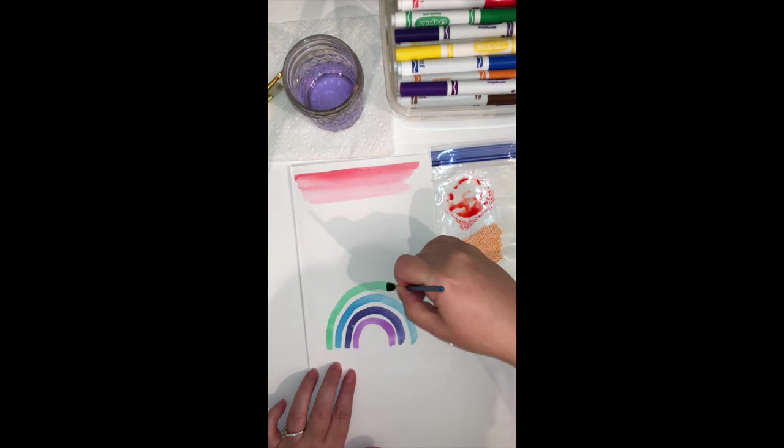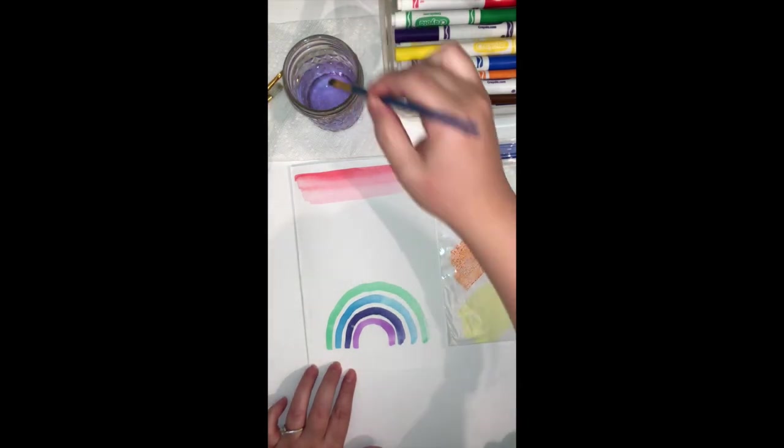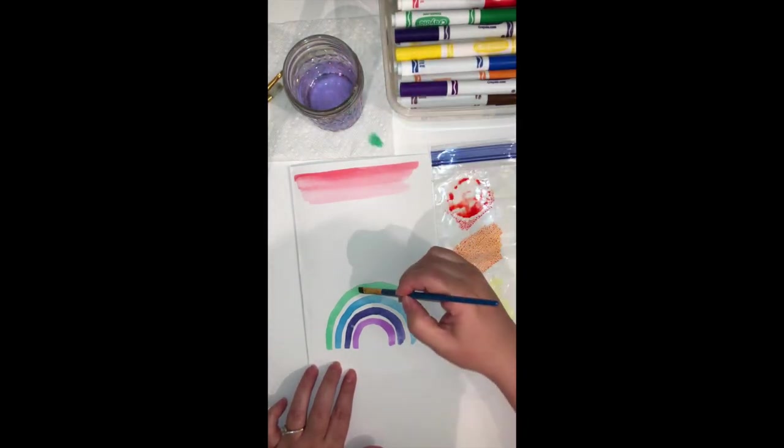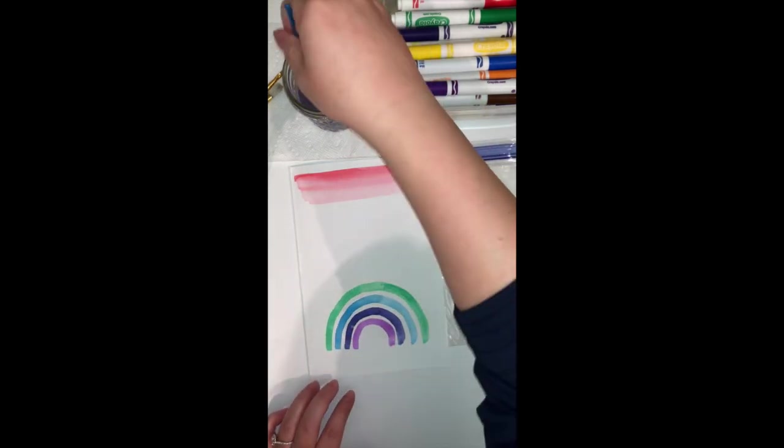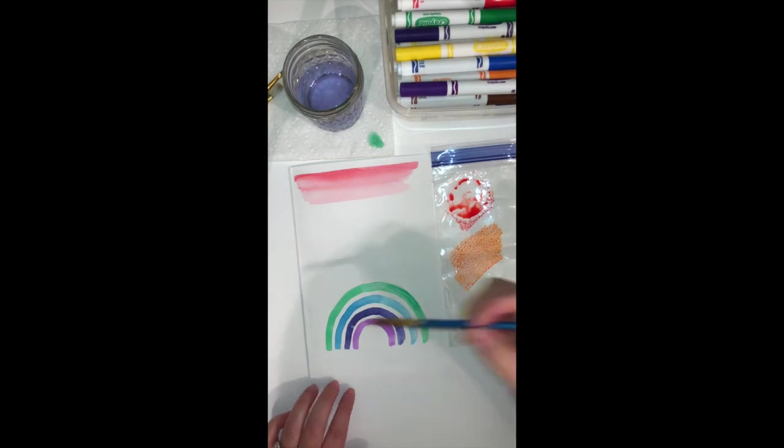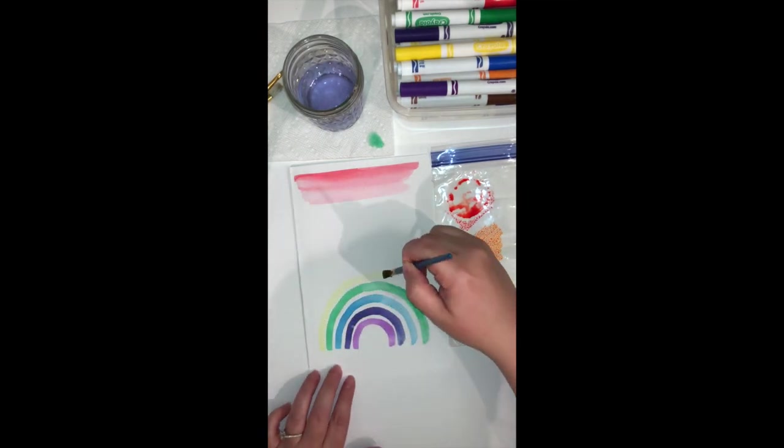If you want your colors to be darker, all you have to do is dry your brush a little bit. You don't want it completely dry—you want a little bit of water on there—but then add more of the watercolor to your brush, so it'll be less water, more color.